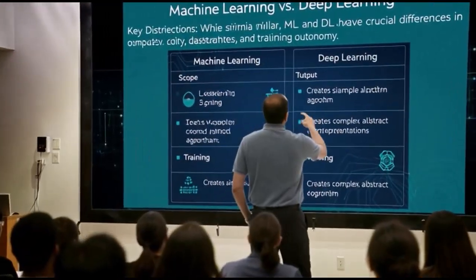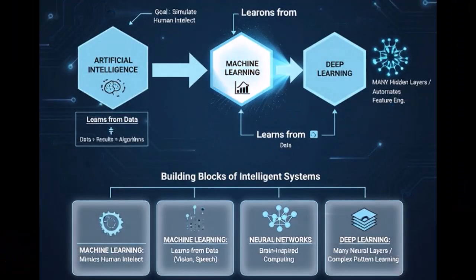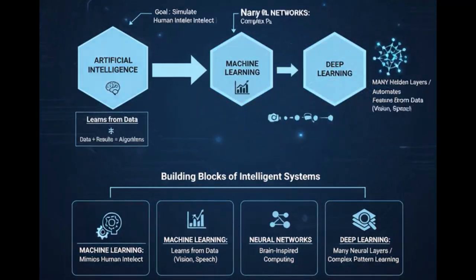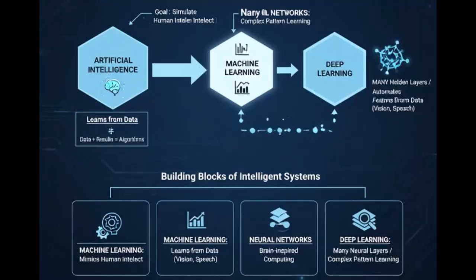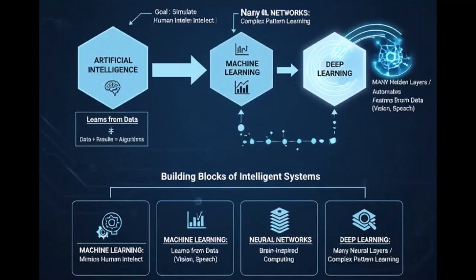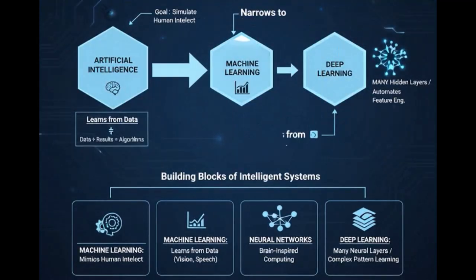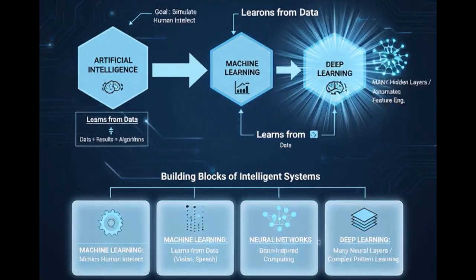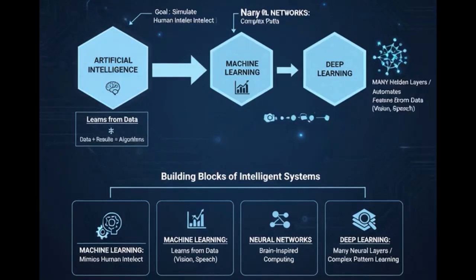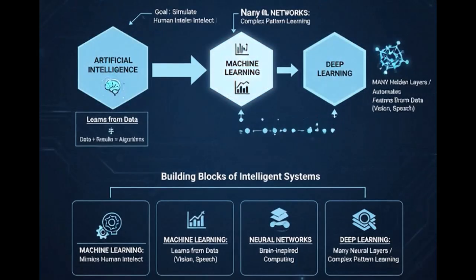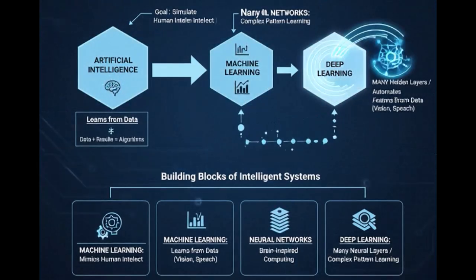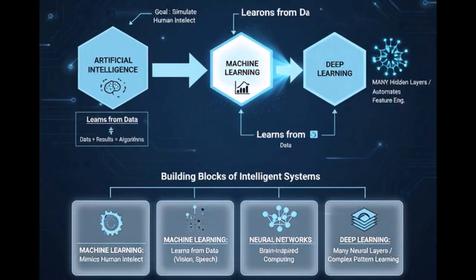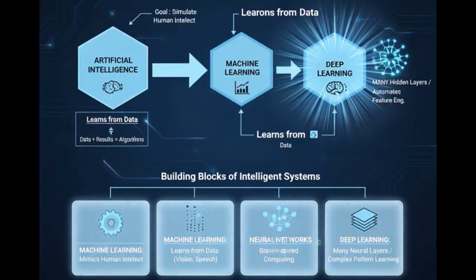And that brings us to the end of our deep dive into the foundational concepts of artificial intelligence. Throughout this session, we've journeyed from the broad definition of artificial intelligence itself — understanding its goal to simulate human intelligence. We then narrowed our focus to machine learning, recognizing its power to learn from data without explicit programming, essentially shifting the paradigm from data plus algorithms equals results, to data plus results equals algorithms.